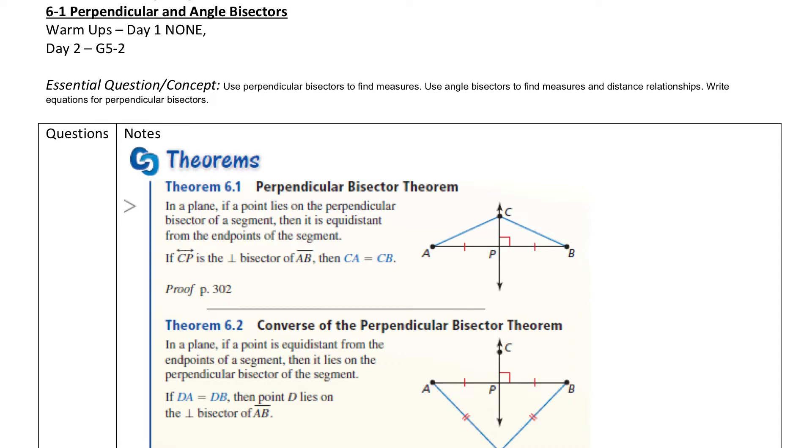The first theorem we'll be discussing is the perpendicular bisector theorem. It says, in a plane, if a point lies on a perpendicular bisector of a segment, then it is equidistant from the endpoints of the segment. So basically, I could point to any point on this perpendicular bisector. If I take a look at this triangle A, B, C, this is a perpendicular bisector. It's cutting the segment A and B in half, and it's perpendicular to it at point P. Any point I put along this perpendicular bisector, no matter where it was, that distance from A to this point and B to that point will be the same.